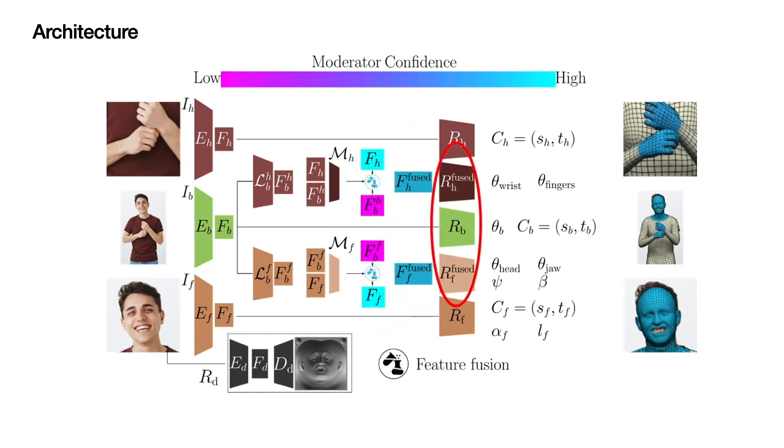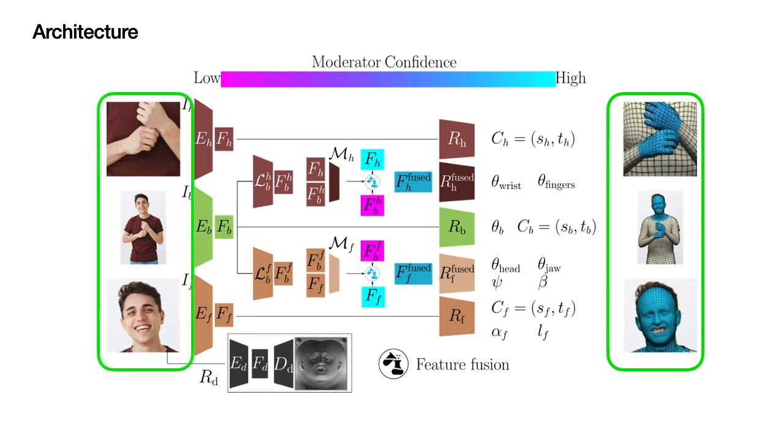The fused features are exploited by PIXI's hand network to predict the wrist and finger articulation and by the head network to predict the jaw pose and expression parameters. In this way, the final predictions exploit information from both the full body and part images.